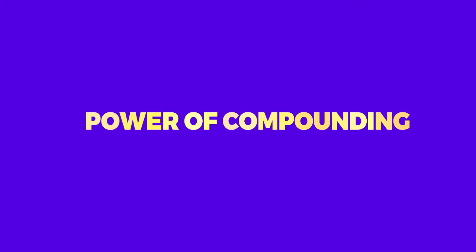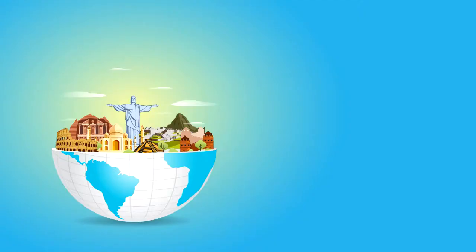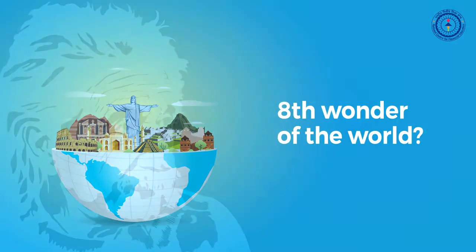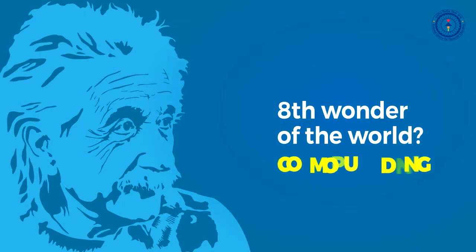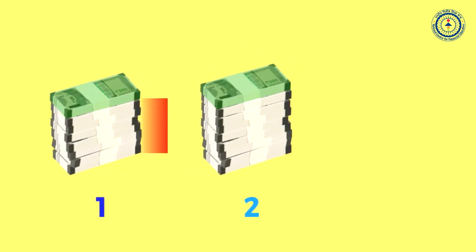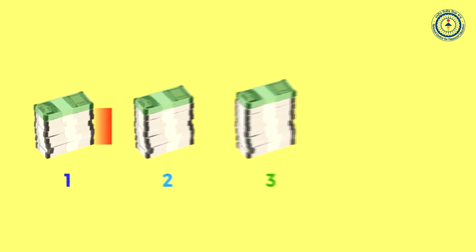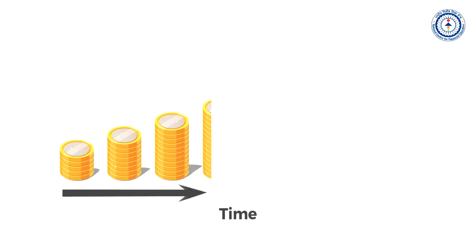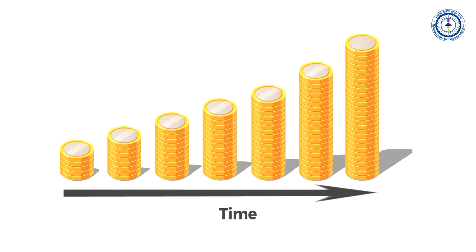Do you know what the eighth wonder of the world is? Albert Einstein said that compounding is the eighth wonder of the world. Compounding means reinvesting interest earned back into the principle of an investment, thereby increasing the principle and thus the subsequent interests. Over time, compounding results in an exponential growth of returns.